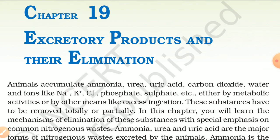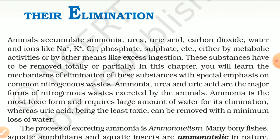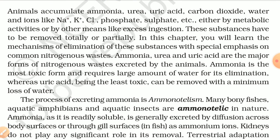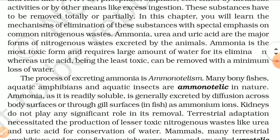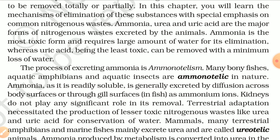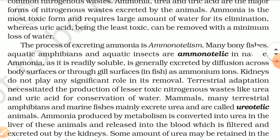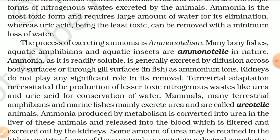Ammonia, urea, and uric acid are the major forms of nitrogenous waste excreted by animals. Ammonia is the most toxic form and requires a large amount of water for its elimination, whereas uric acid being the least toxic can be removed with a minimum loss of water. The process of excreting ammonia is ammonotelism. Many bony fishes, aquatic amphibians, and aquatic insects are ammonotelic in nature. Ammonia, as it is readily soluble, is generally excreted by diffusion across body surfaces or through gill surfaces in fishes as ammonium ions. Kidneys do not play any significant role in its removal. Terrestrial adaptation necessitated the production of lesser toxic nitrogenous waste like urea and uric acid for conservation of water.